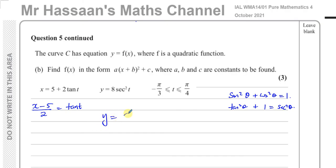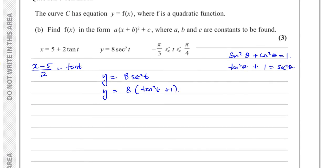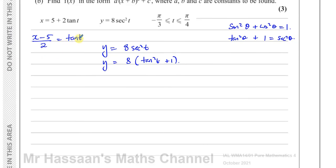This means I can replace the secant squared theta with tan squared theta plus 1. So let me just write this so we know that y is equal to 8 times secant squared t. So I can rewrite this as 8 times tan squared t plus 1. And now I know that tan t can be replaced by x minus 5 over 2. And when I do that, I will have now basically eliminated the t from my equation.